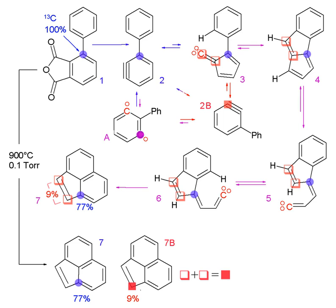In isotopic labeling, there are multiple ways to detect the presence of labeling isotopes: through their mass, vibrational mode, or radioactive decay. Mass spectrometry detects the difference in an isotope's mass, while infrared spectroscopy detects the difference in the isotope's vibrational modes. Nuclear magnetic resonance detects atoms with different gyromagnetic ratios.